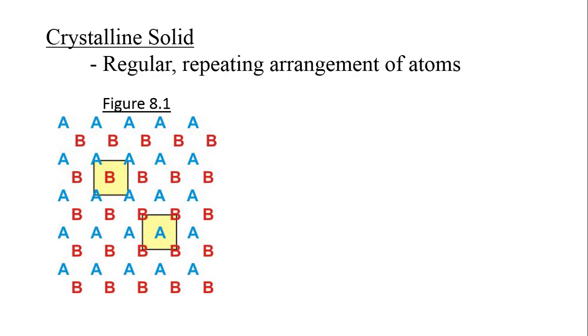We take this two-dimensional example from Figure 8.1 in the textbook. Note the regular arrangement of A's and B's. Of course, real atoms live in a three-dimensional world, and that three-dimensional arrangement is called a crystal lattice.